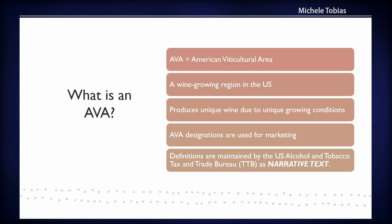So, introduction: what is an AVA? AVA stands for American Viticultural Area. I'm going to shorten that to AVA. These are wine growing regions in the United States and they are supposed to produce a unique quality of wine due to the unique growing conditions in these areas. These designations are used purely for marketing and they are administered by the US Alcohol and Tobacco Tax and Trade Bureau, shortened to TTB.